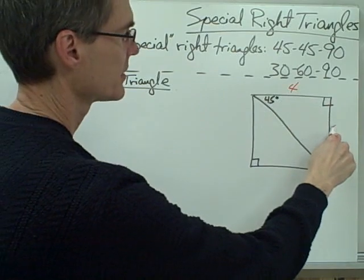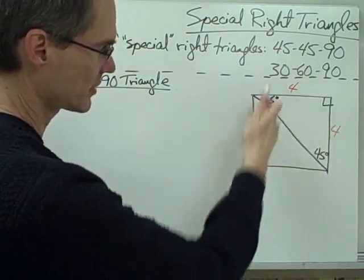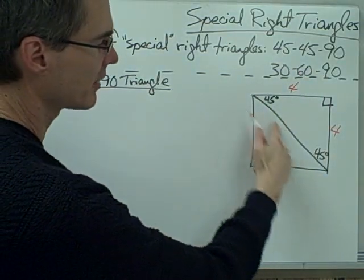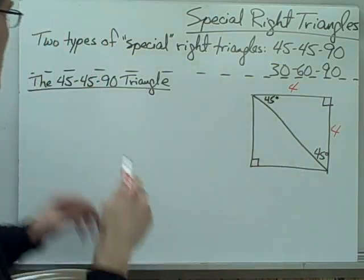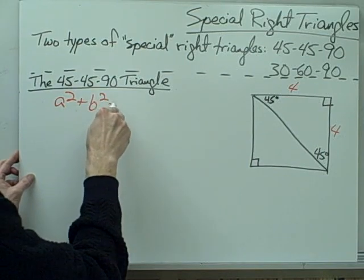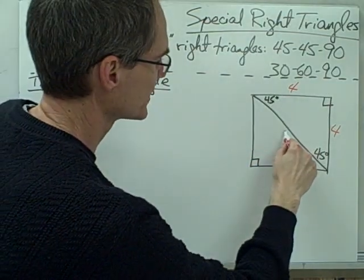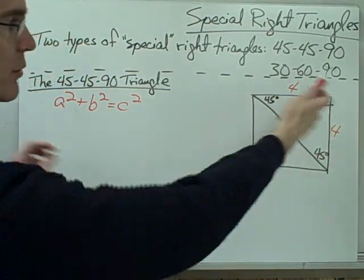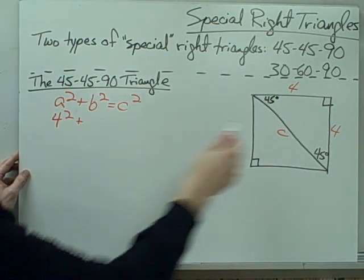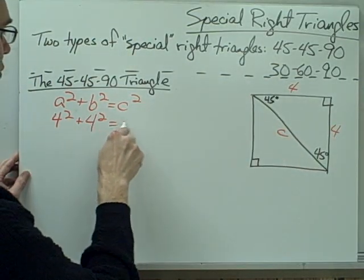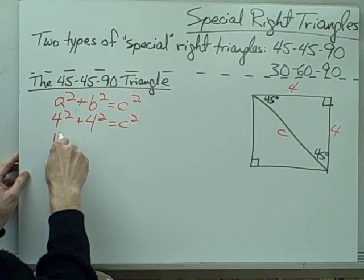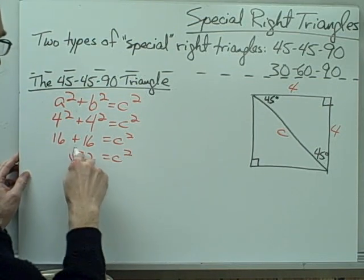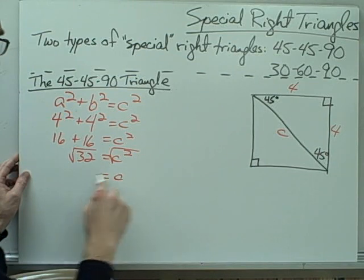Let's say that this 45-45-90 triangle, based on this square, has sides of four centimeters. We want to find the length of the diagonal using the Pythagorean theorem, which is a² + b² = c², where c is the length of the hypotenuse. So: 4² + 4² = c², which gives us 16 + 16 = c².